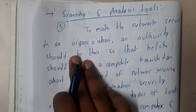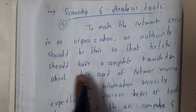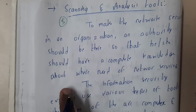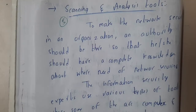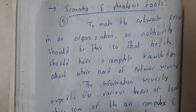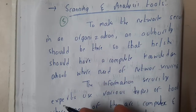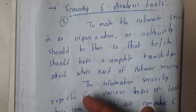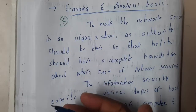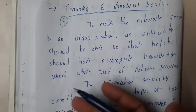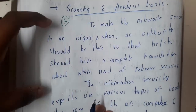To make the network secure in an organization, an authority should have complete knowledge about where security is needed. Assume you are the head of a huge organization and you know everything about the company — what kind of attack could occur and where. In that situation, protecting those areas will be really easy. That is the reason why we should have someone with complete knowledge.